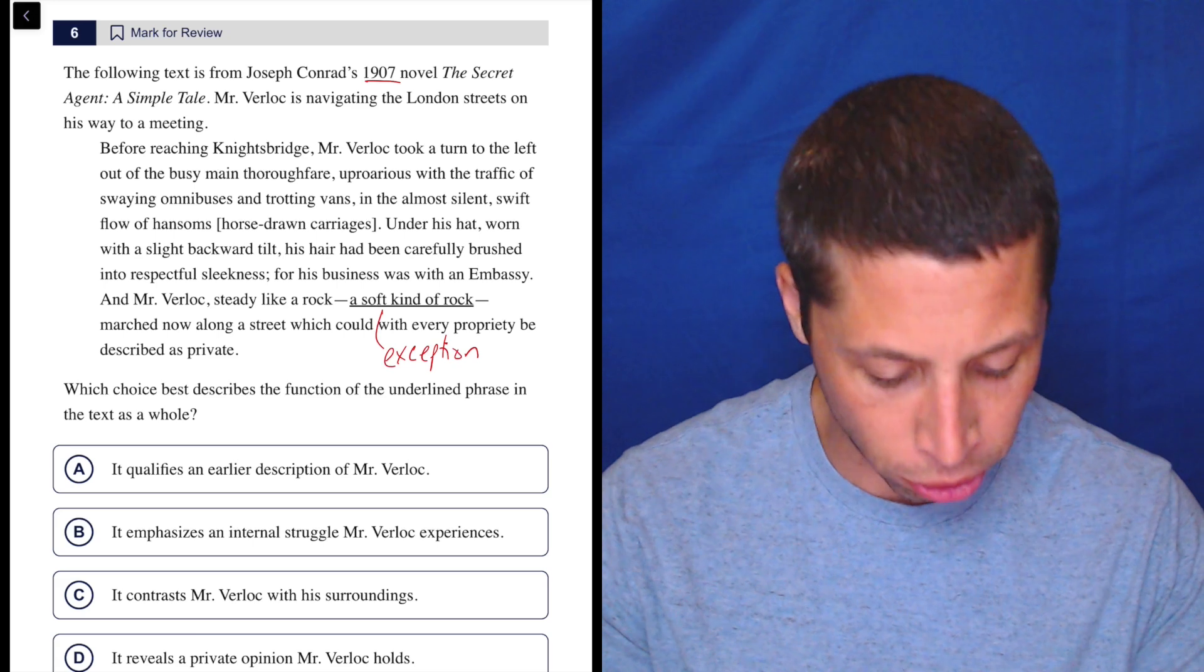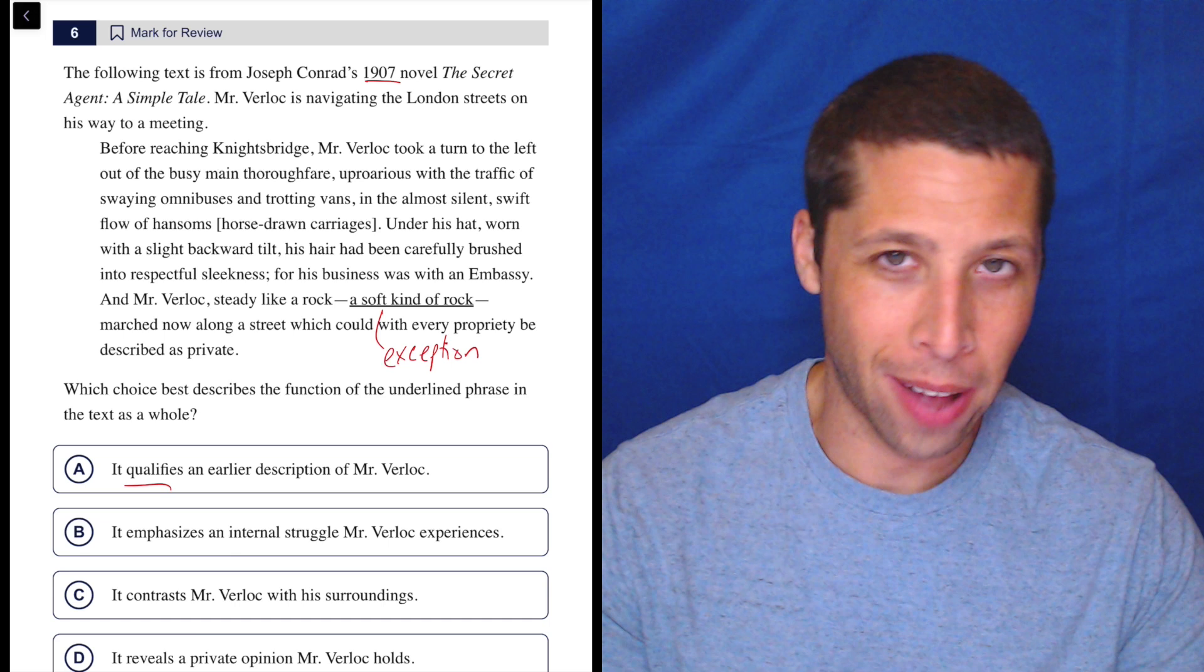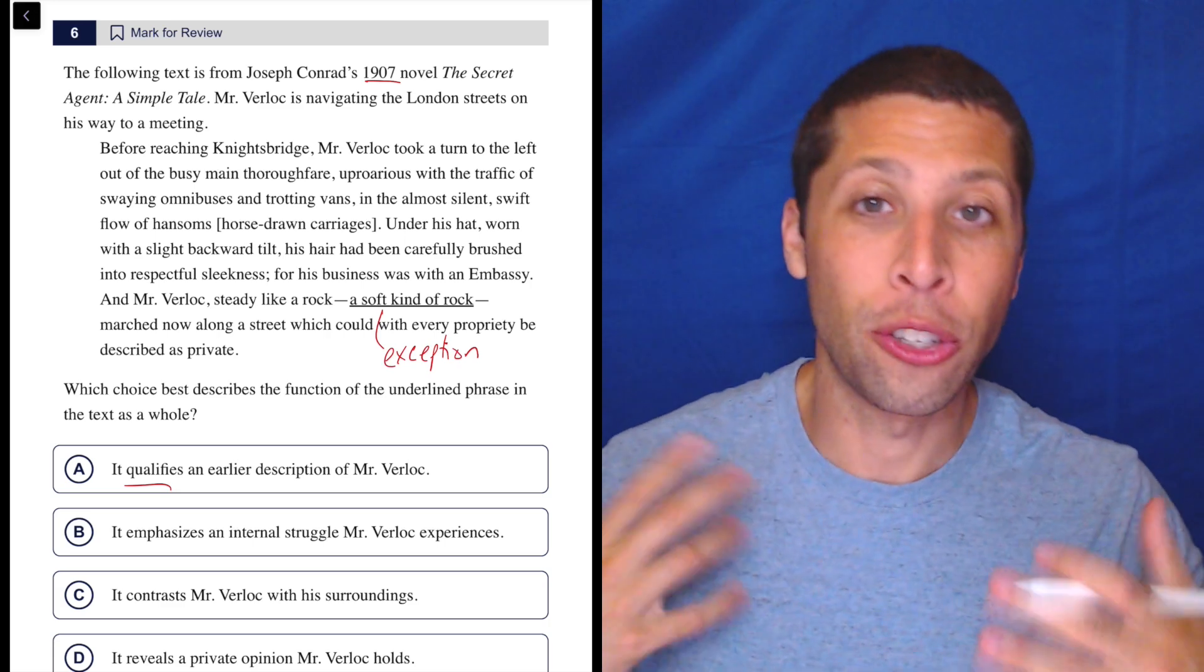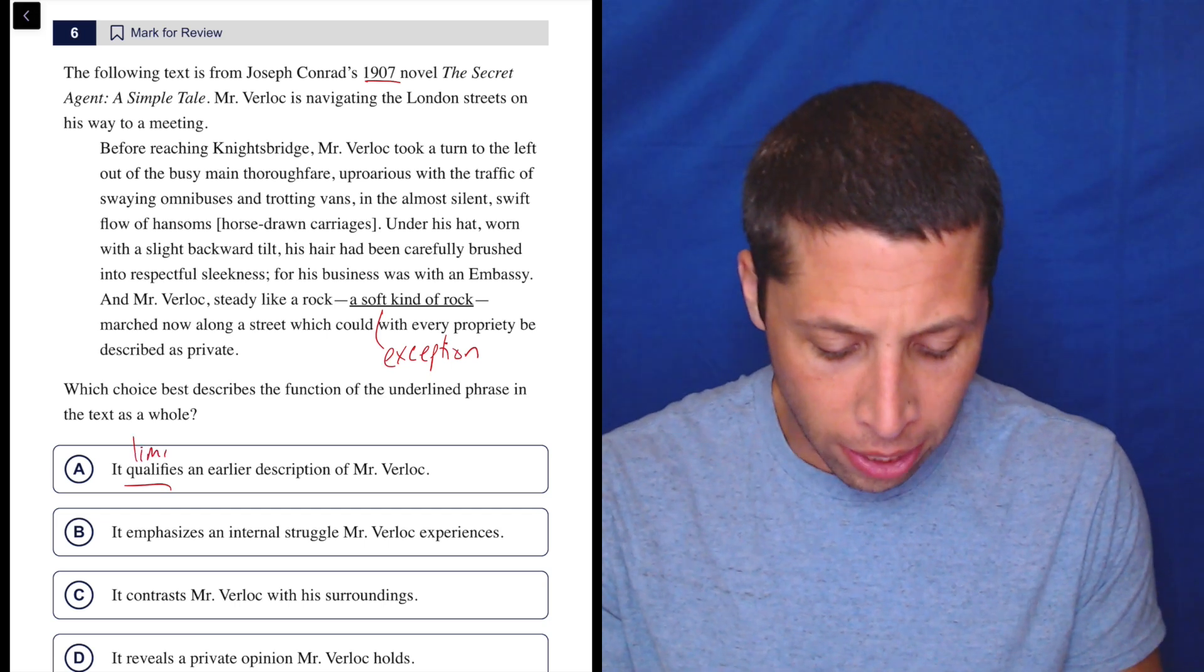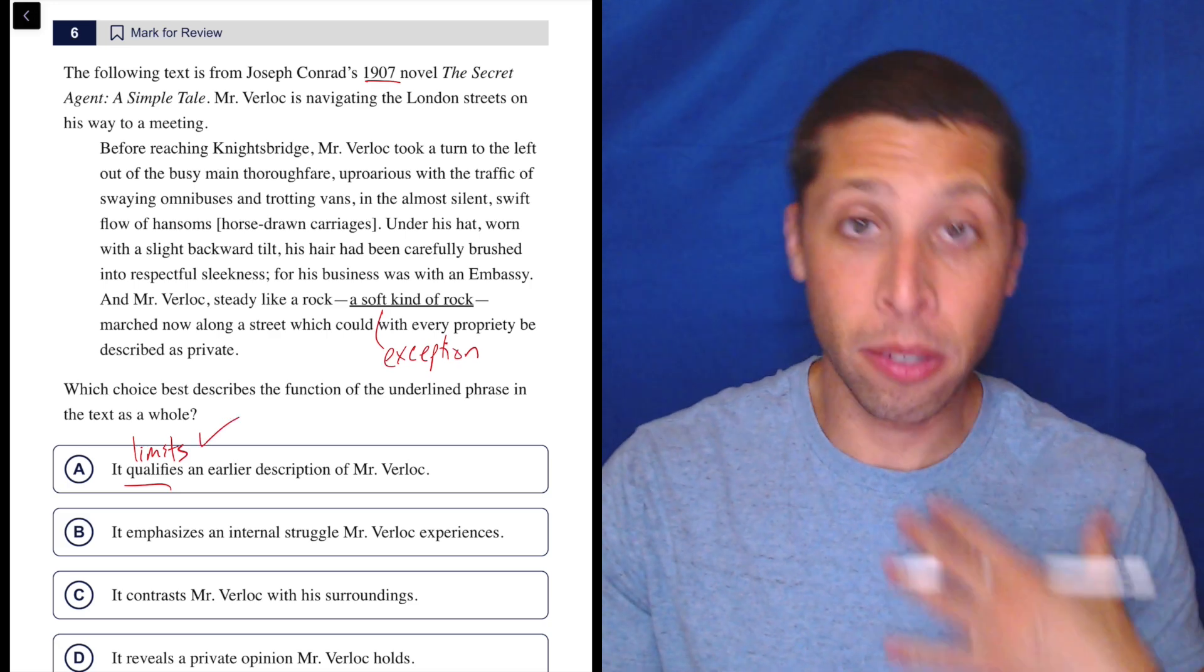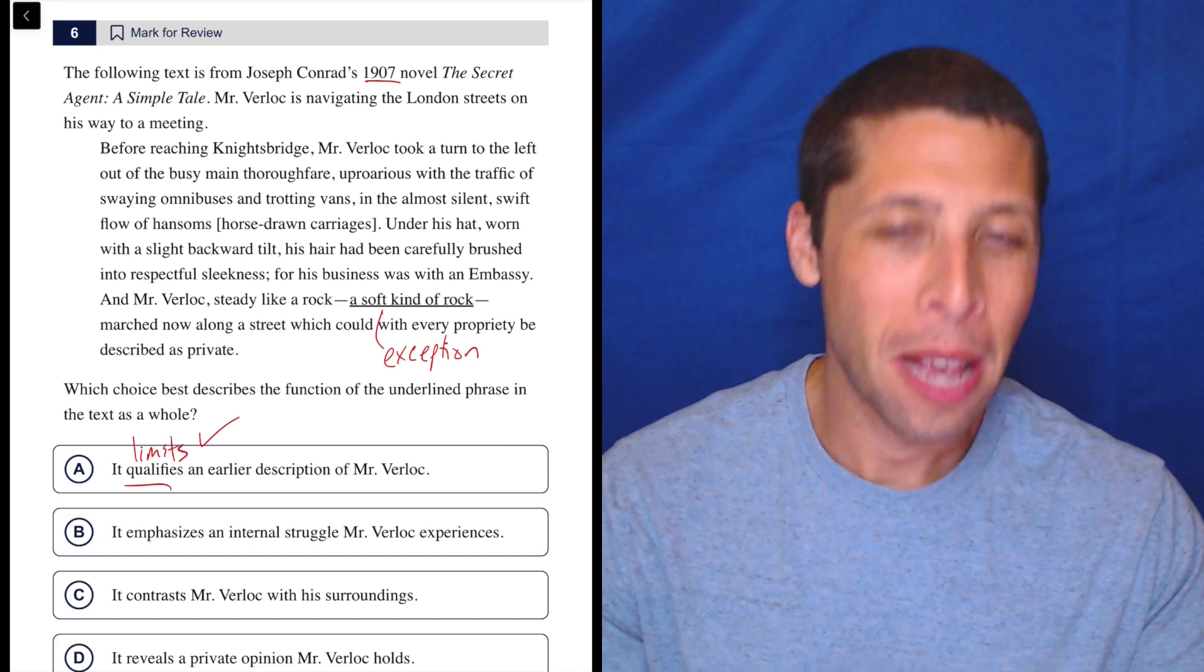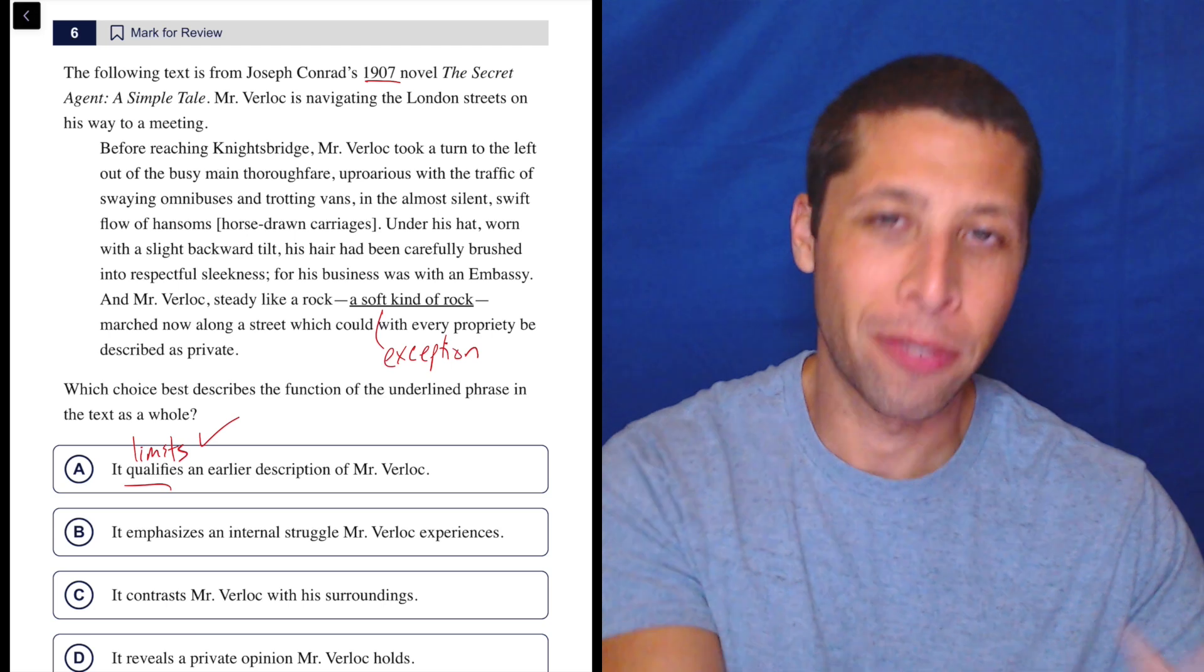So A, it qualifies an earlier description of Mr. Verloc. Now, a lot even eliminate that choice because you don't know what qualifies means. So you think of qualify as a word that means like if you are qualified for a job - you have experience, you have the credentials, you have the knowledge to do something. You are qualified. But qualify also has the definition of kind of limits. It limits an earlier description of Mr. Verloc. It gives an exception. So to me, someone who knows what qualifies means, it has that kind of easy match, a strong word match. So I'm already leaning towards this. But let's look at B, C and D. What if we didn't know a word like qualifies, if it didn't stand out to us as an obvious synonym for kind of what we saw?